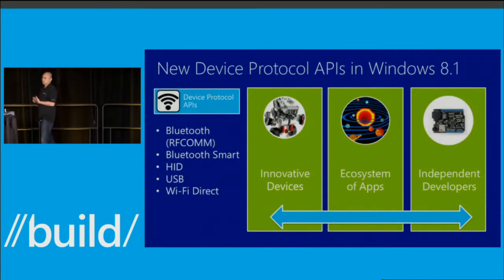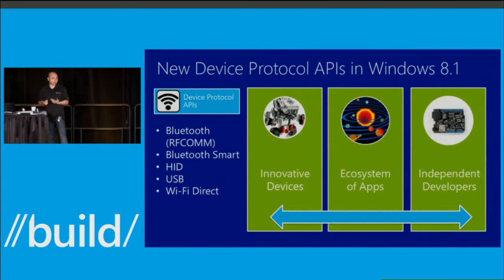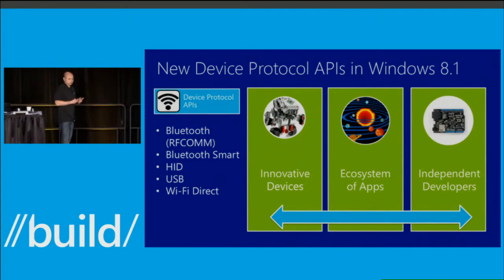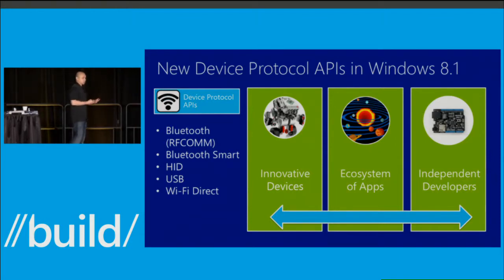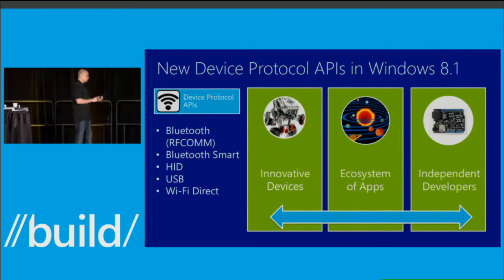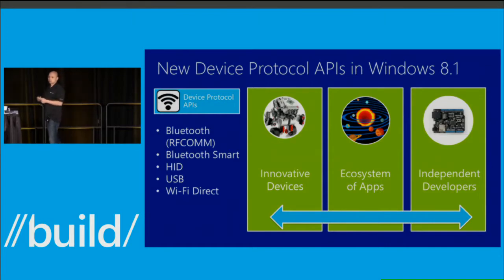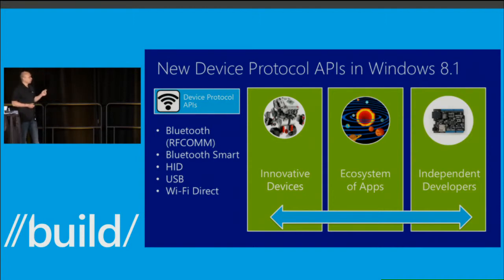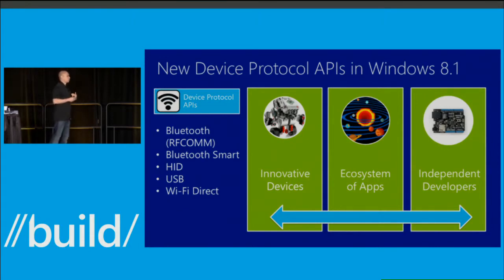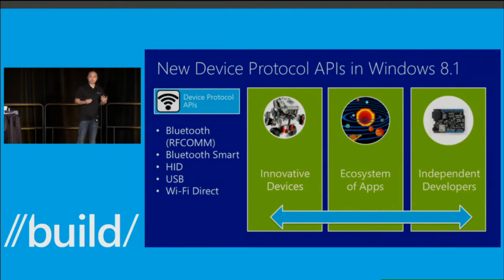For protocols such as Bluetooth, HID, USB, and Wi-Fi Direct, Windows 8 primarily enabled hardware developers to provide apps using these technologies by delivering an app package that includes a device driver, device metadata, and the app itself — focused on dedicated vertical scenarios for that specific device. In Windows 8.1, we provided direct access to these protocols in the Windows Runtime, making writing apps much easier as there's no driver to deliver, and it also allows these apps to work on ARM-based PCs running Windows RT.